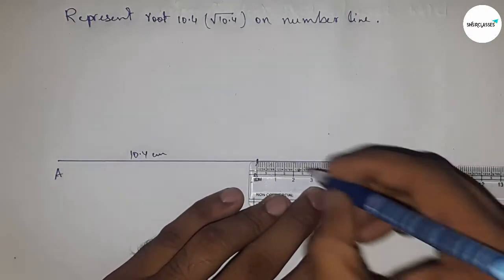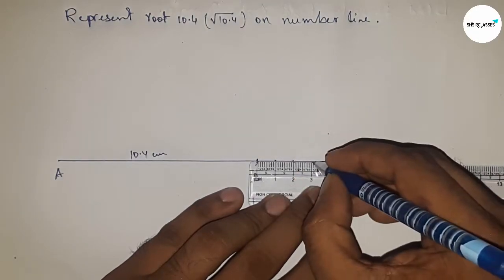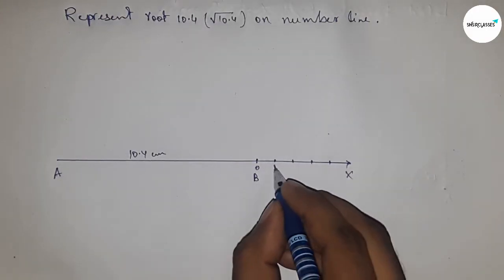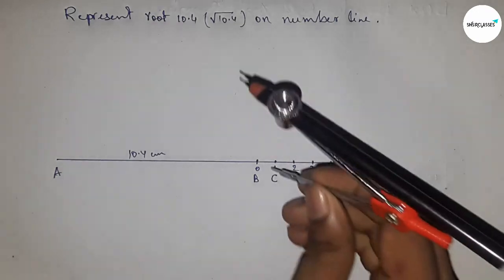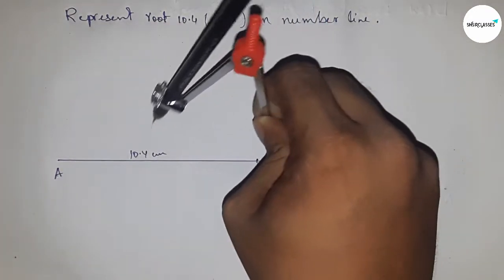This is 0, 1, 2, 3, 4, and so on. Taking this as point C. Next we have to bisect the line AC, so taking greater than half of AC and drawing arcs with the same length.